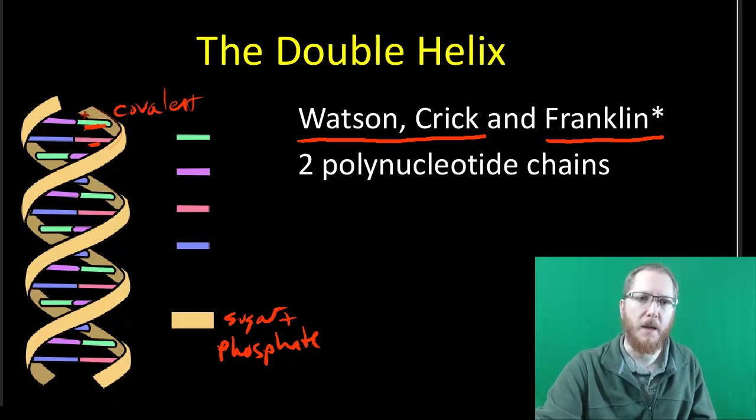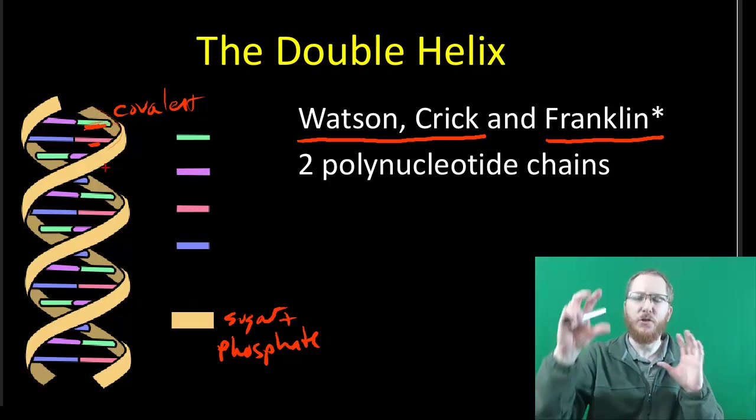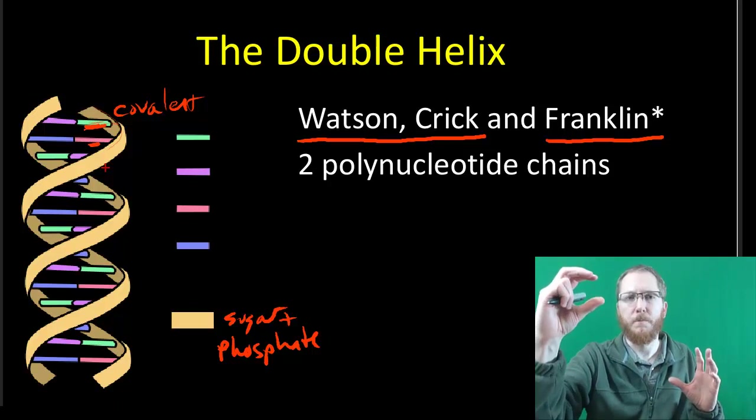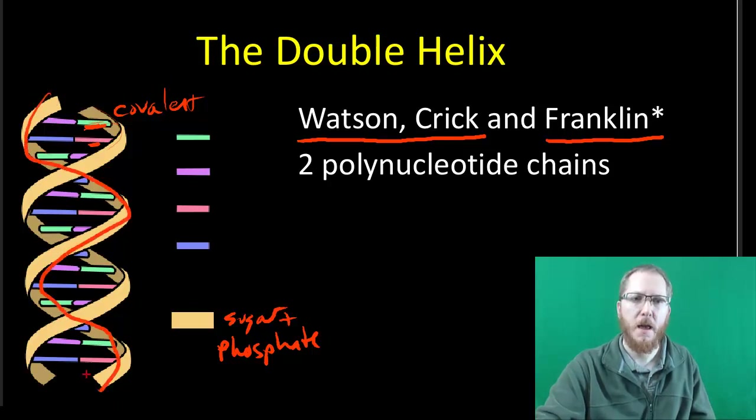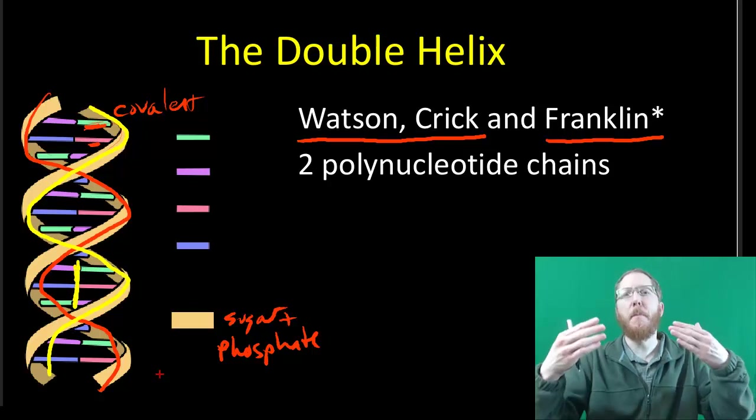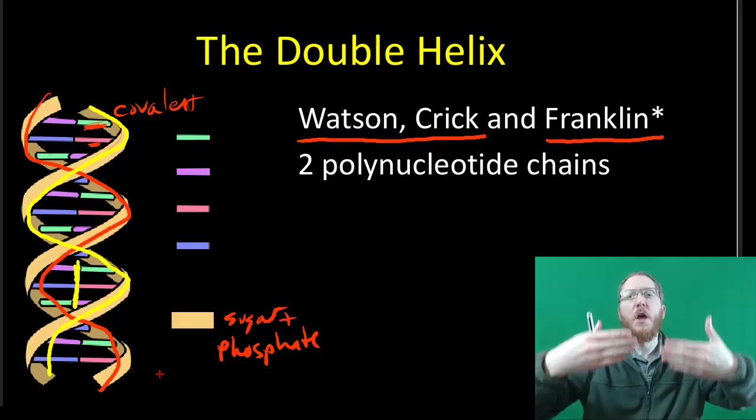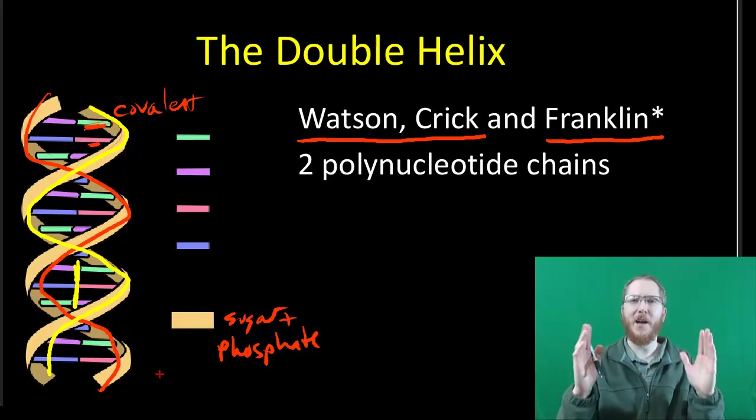The nitrogen base is the middle guy, and that's also covalently bonded to the edge. So this is very, very strong. The weak part of this is where the two chains get close to each other. Those are just going to be hydrogen bonds, so those are held together more weakly.